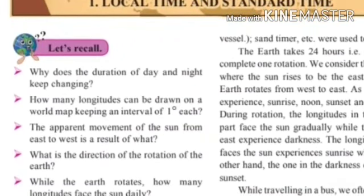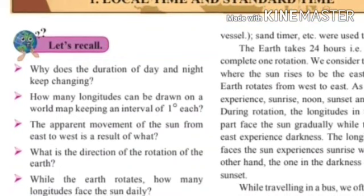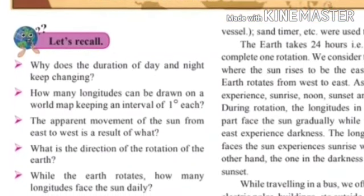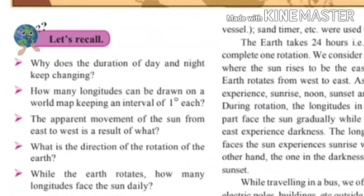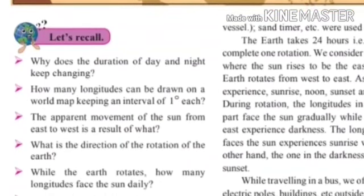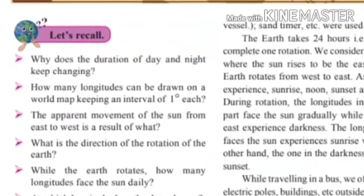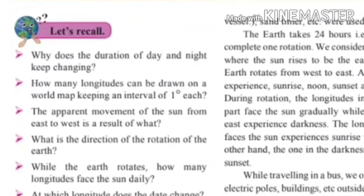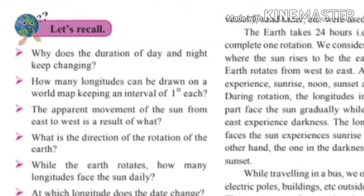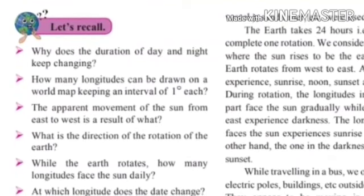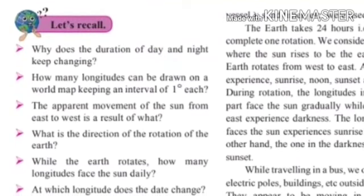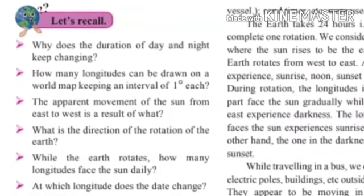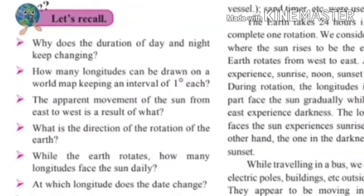The apparent movement of the sun from east to west is a result of what? The answer is the apparent movement of the sun from east to west is a result of the rotation of the earth from west to east. What is the direction of the rotation of the earth? The direction of rotation of the earth is from west to east.